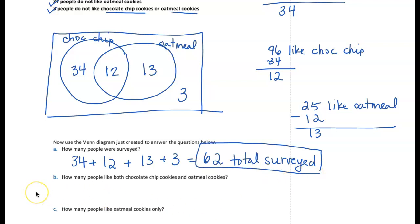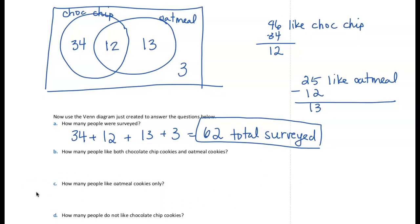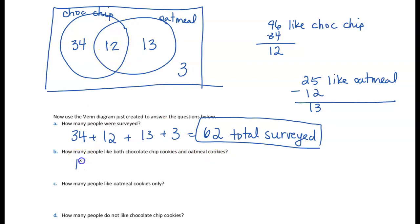Part B: How many people like both chocolate chip cookies and oatmeal cookies? If they like both, they need to be within both the chocolate chip and oatmeal cookie sets — that's the center overlap space. So 12 people like both.